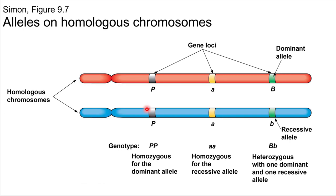Each allele exists at a particular location on these chromosomes. We call those locations loci — that's the formal word for location on a chromosome. Homozygous dominant means that both chromosomes have the uppercase version of the allele. Homozygous recessive means both chromosomes have a lowercase version. And heterozygous means we've got some type of combination — one has uppercase, the other has lowercase.